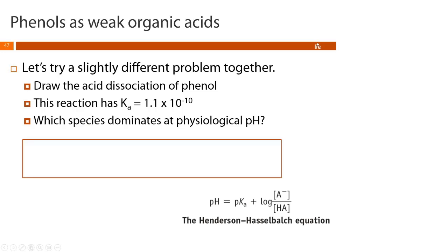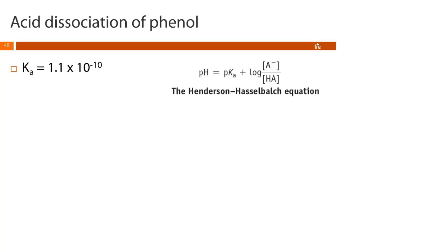Now let's try an example using a phenol. We'll write the acid dissociation of phenol, which has a Ka — an acid dissociation constant — of 1.1 × 10⁻¹⁰. We draw our chemical reaction and then use the Henderson-Hasselbalch equation to determine which species dominates at physiological pH. We set up the equation with pH = 7.4, but we don't have a pKa, only a Ka. How do we get the pKa from just the acid dissociation constant?